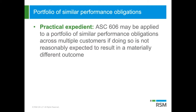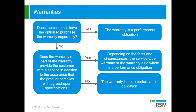The next slide addresses warranties. The accounting for warranties under the new model depends on a variety of factors. The first thing you consider is: does the customer have the option to purchase the warranty separately? If they can buy it separately, treat it as a performance obligation. If it can't be bought separately, you look to see whether the warranty provides the customer with service in addition to assurance that the product complies with stated specifications. Factors to consider include whether the warranty is required by law, the length of the warranty coverage period, and the nature of the tasks the entity promises to perform.